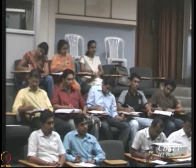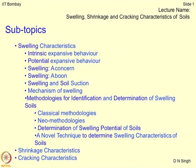Determination of tensile strength is not an easy task; most of the time you do triaxial tests and from there you can get tensile strength. With this in view, I am trying to give you a good idea about these three mechanisms. First is swelling characteristics — here we will be talking about intrinsic expansive behavior of soils followed by potential expansive behavior of soils. What is the difference between intrinsic and potential expansive behavior of soils?